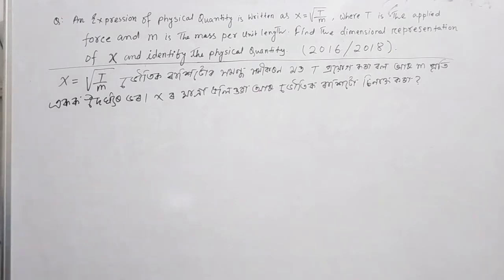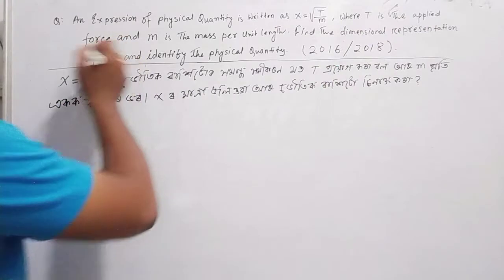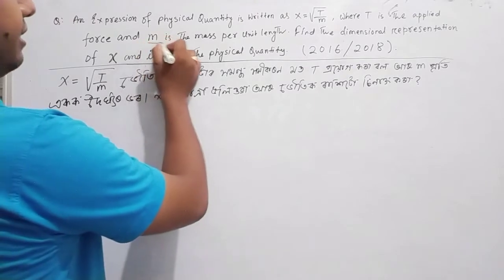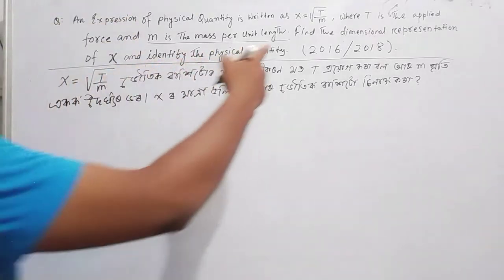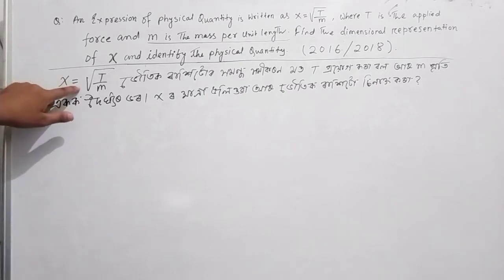The question is: an expression of physical quantity is written as X = √(T/m), where T is the applied force and m is the mass per unit length. Find the dimensional representation of X and identify the physical quantity.